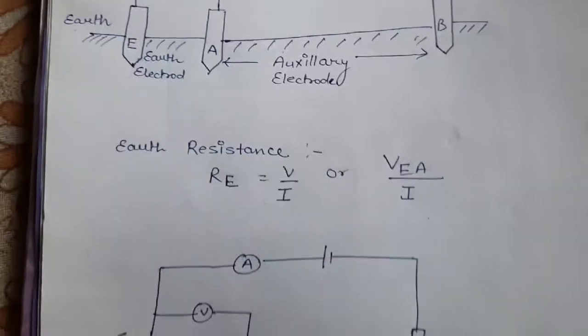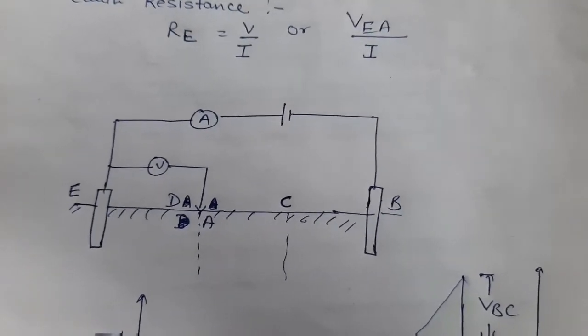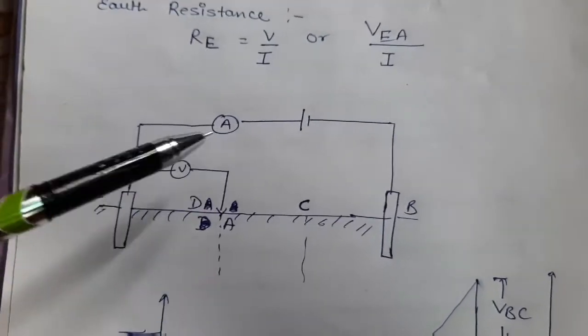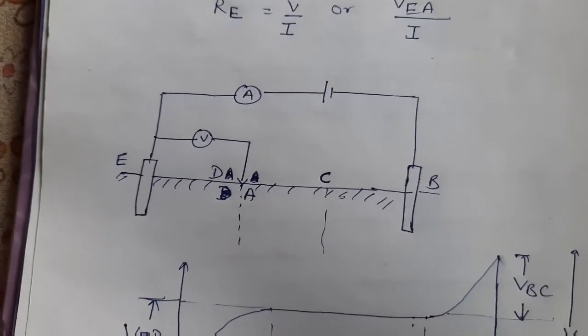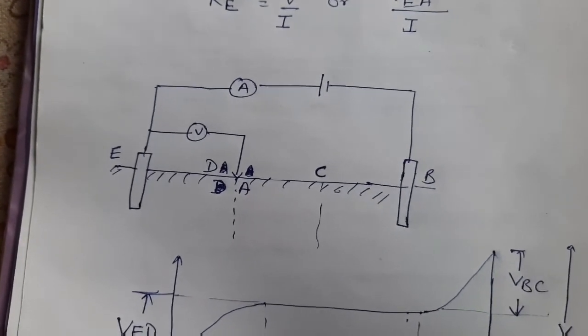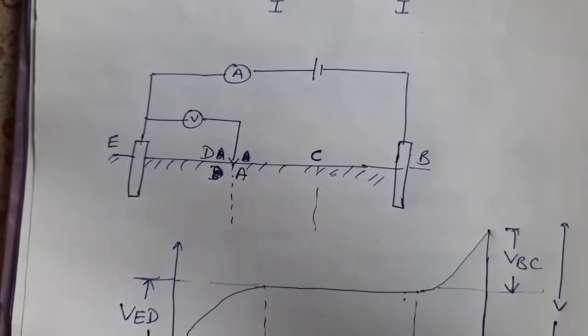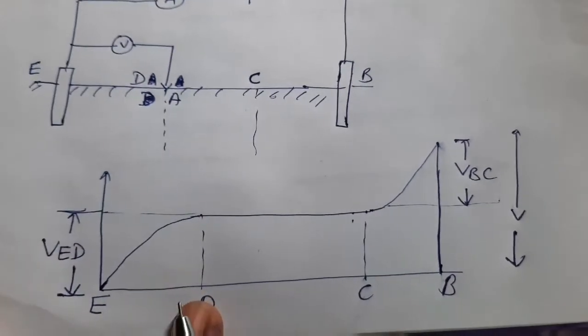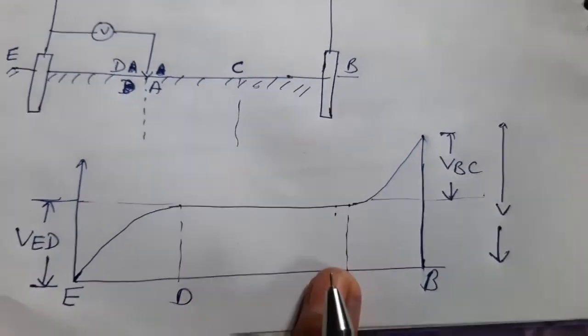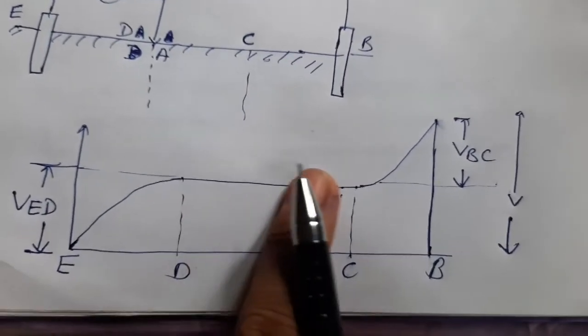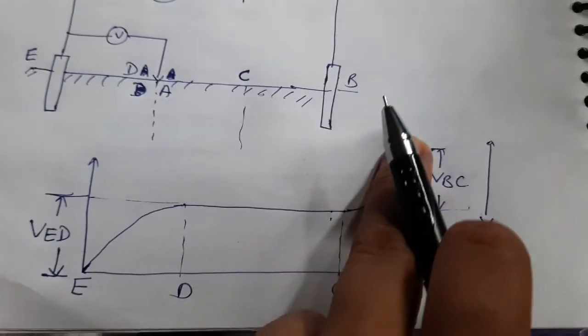Let's see this diagram. The auxiliary electrode position is varied, shown by a dotted line, while the other two electrodes are fixed. Initially when going from E to D, the voltage rises. Between D and C the voltage is constant, and again between C and B the voltage rises.